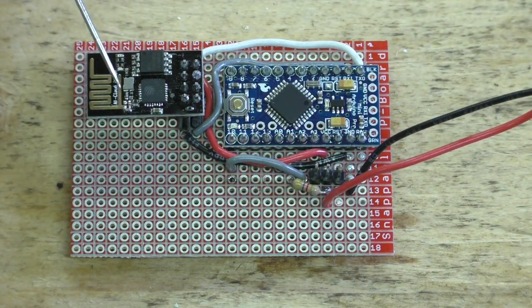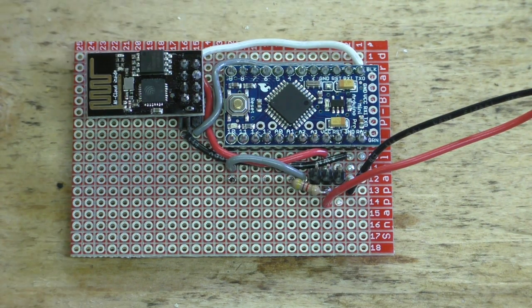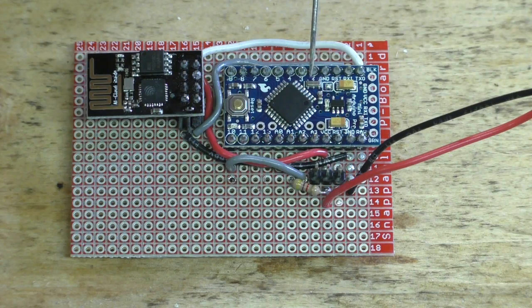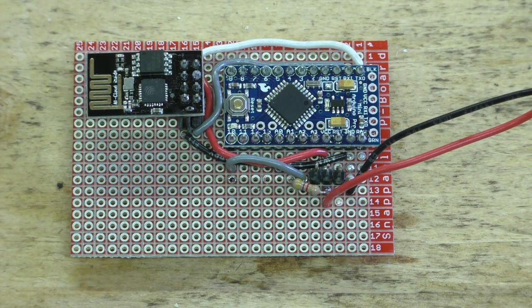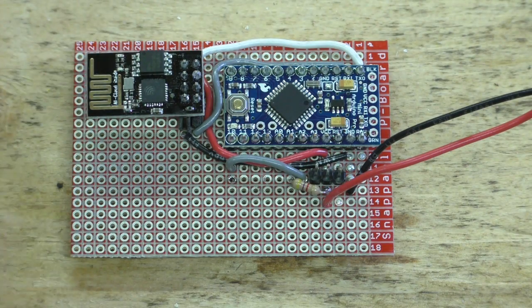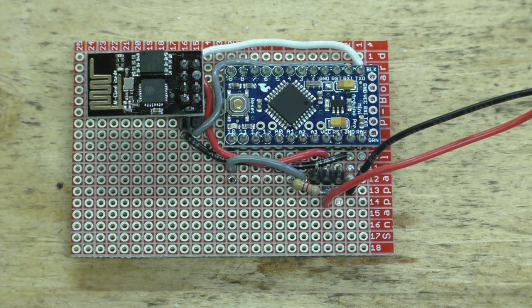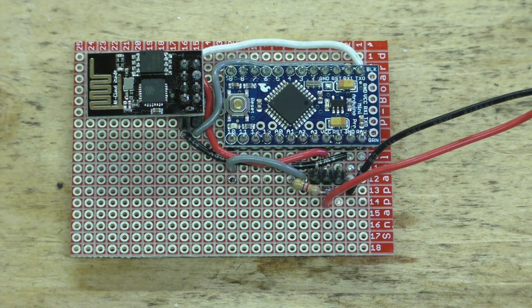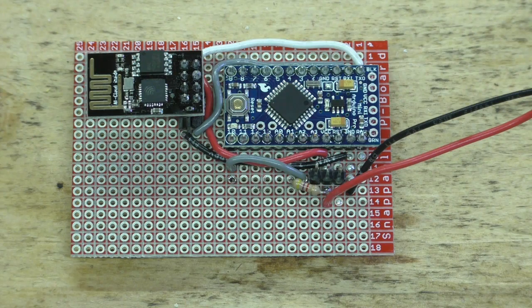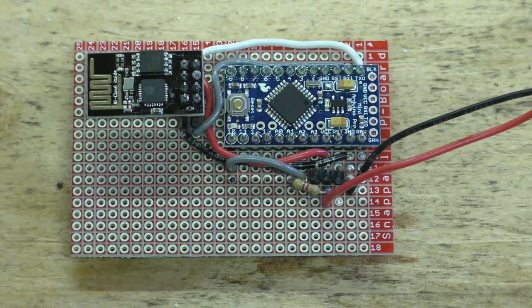It has an ESP8266, that's a Wi-Fi module, and it also has an Arduino Pro Mini. What this is going to do is take the temperature reading of my pool, take the temperature on set intervals, and then send that data through the Wi-Fi module to a data logging service.